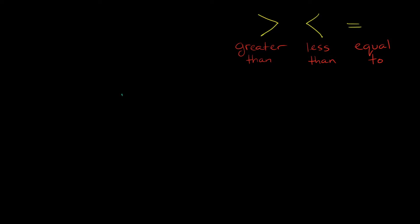Let's say we wanted to compare the absolute value of negative 5 and the absolute value of negative 3, but I'm also going to put a negative sign out here in front. So how can we simplify these? Let's start with negative 5. What's the absolute value of negative 5? Well, this negative sign basically just goes away and all we're left with is 5. So the absolute value of negative 5 is just 5.